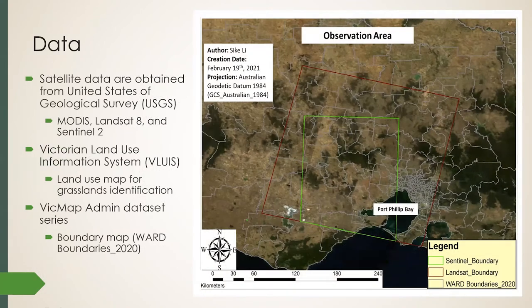Satellite data include MODIS, Landsat-8, and Sentinel-2 downloaded from USGS. A land use map for grassland identification is obtained from VALUIS, and this map is from VicMap.